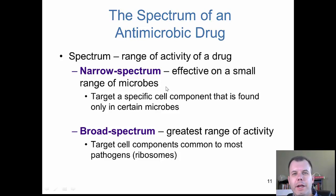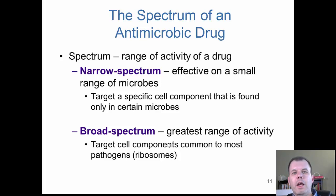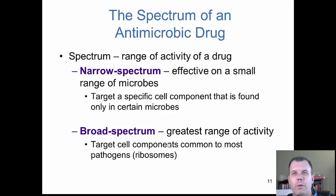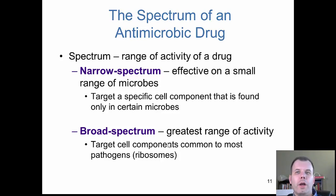Narrow versus broad spectrum: narrow spectrum is a small amount of microbes targeting a specific cell component on only certain microbes, whereas broad spectrum targets one of the components common to most pathogens. When talking about drug of choice, you'd rather use a broad spectrum if you're not really sure what the pathogen is. If you know it's gram negative but don't know which one, you'd rather give a broad spectrum that affects all gram negatives rather than a drug targeting just pseudomonas, for example.